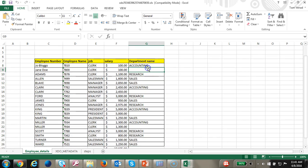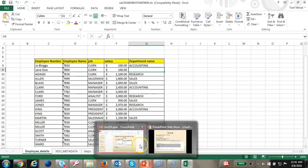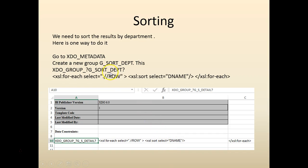In order to sort, what we have to do is create a new group. We are going to sort it by selecting the root as a row, and we are going to select the sort condition for each element. Basically we are going to select a new element which is a group, and we are going to sort it. Let's go ahead and add this.